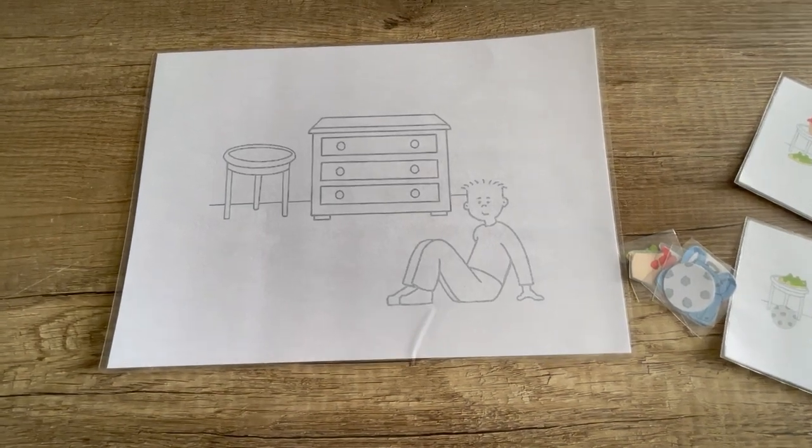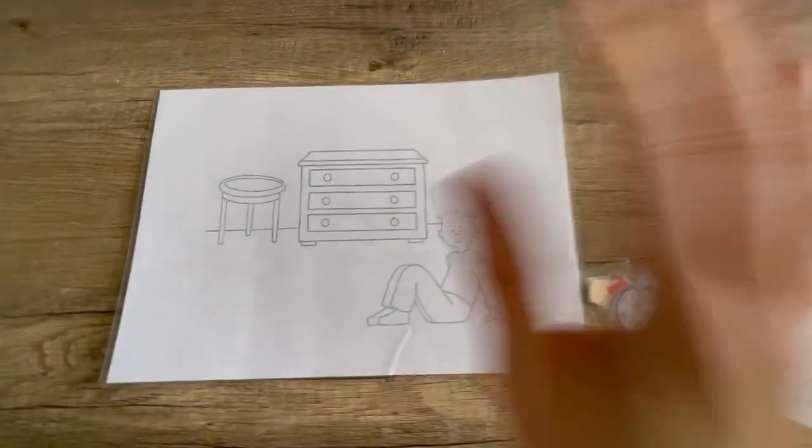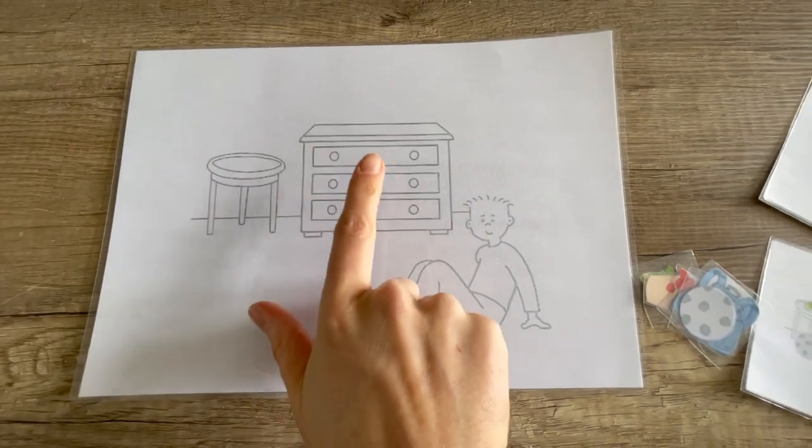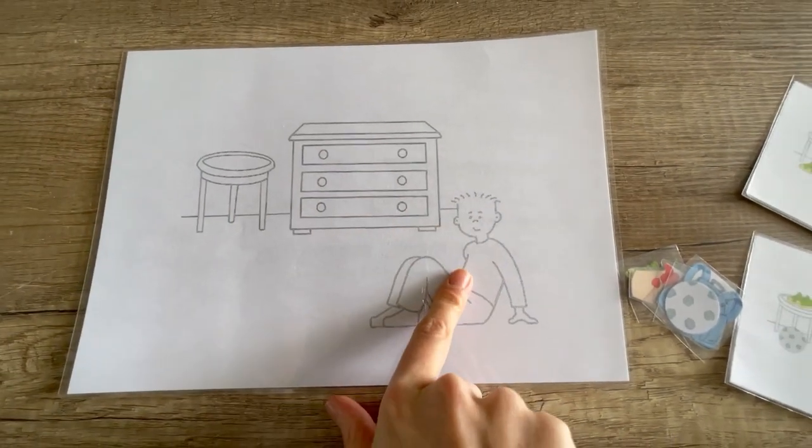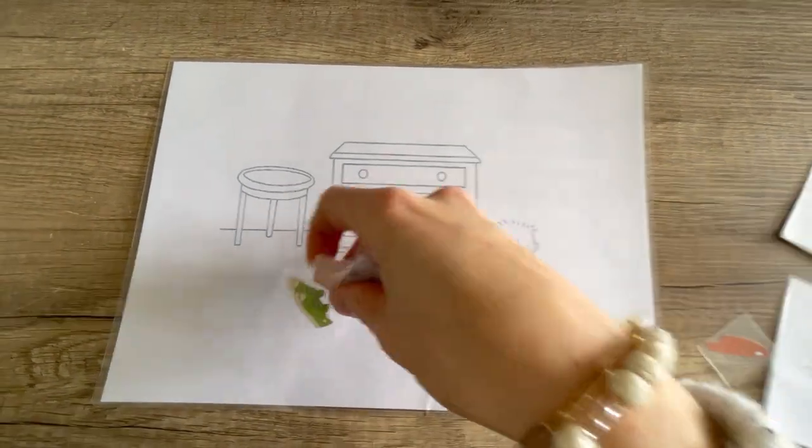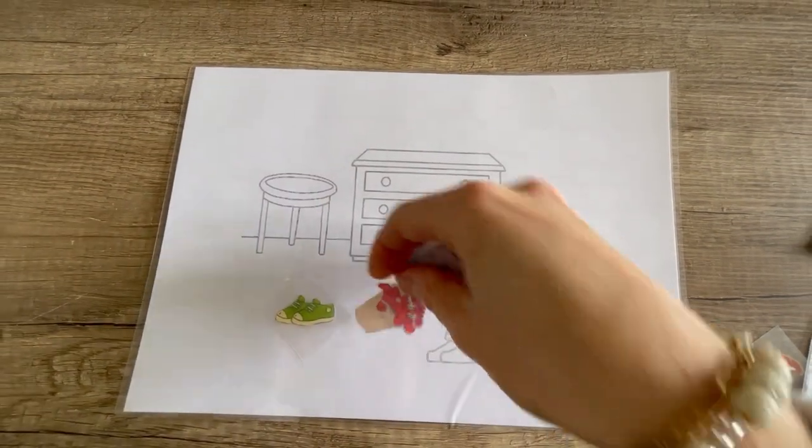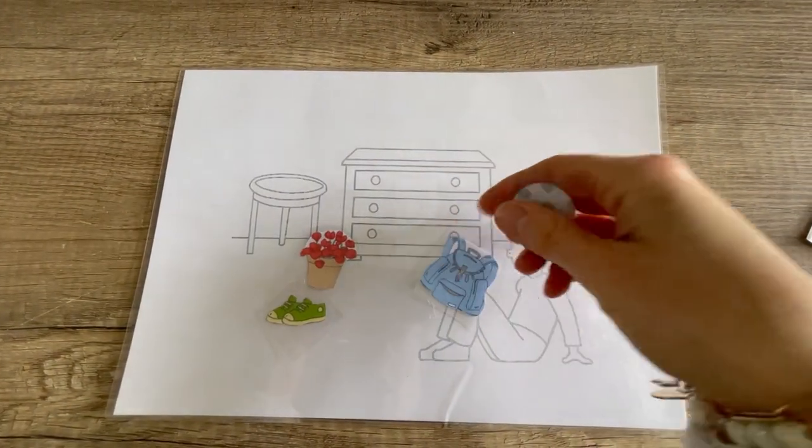It's a new game about spatial structuring. You have a big picture with a table, a chest of drawers, and a body, and then you have a small picture with shoes, flower, bag, balloon, and a cup.